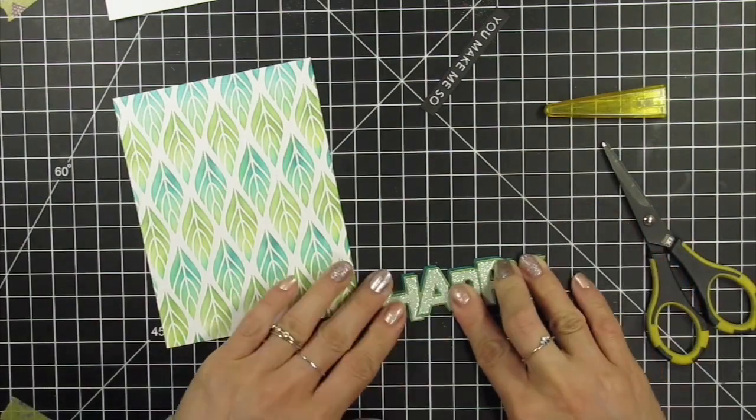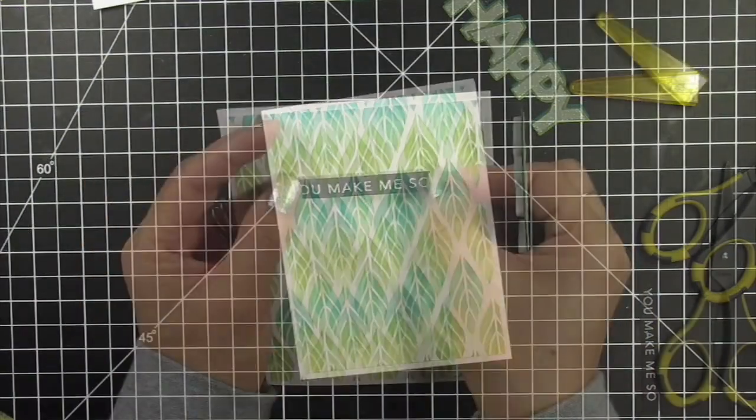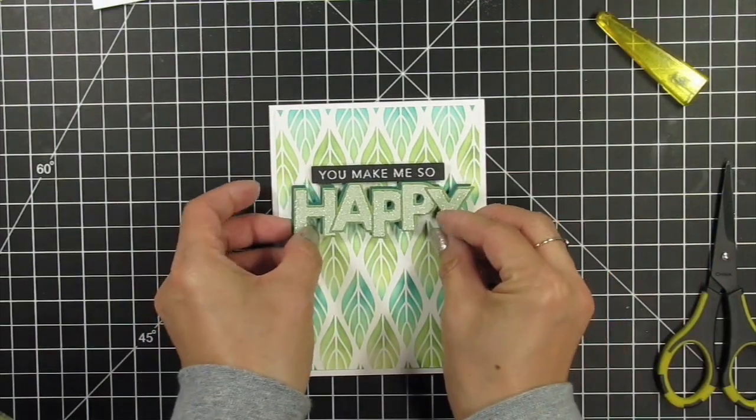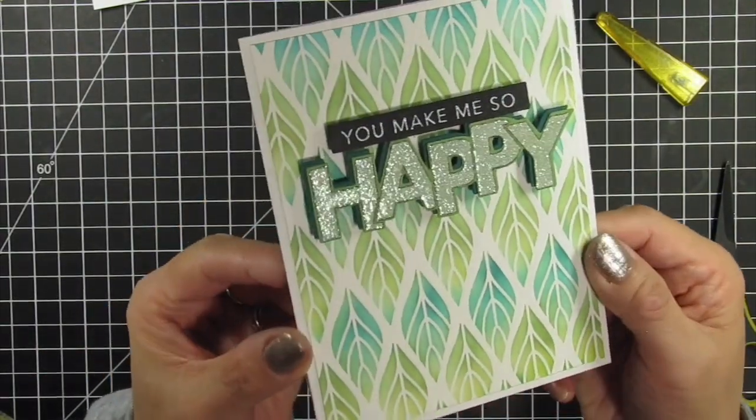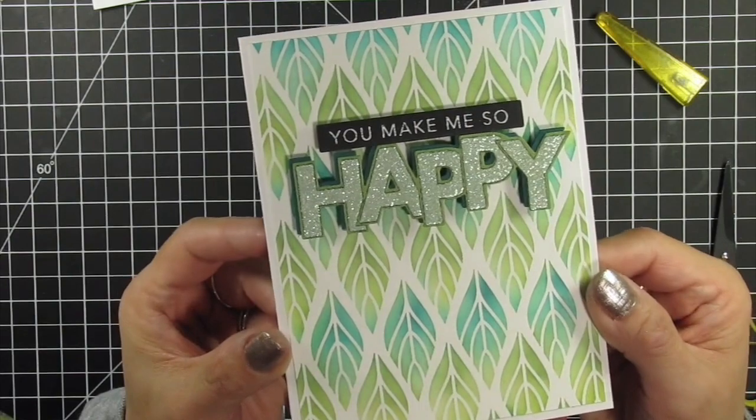For the second card, I adhered the heat embossed layer to its shadow, trimmed down the panel by a quarter inch, and attached it to a Sugar Cube card base. This is simple but so gorgeous.